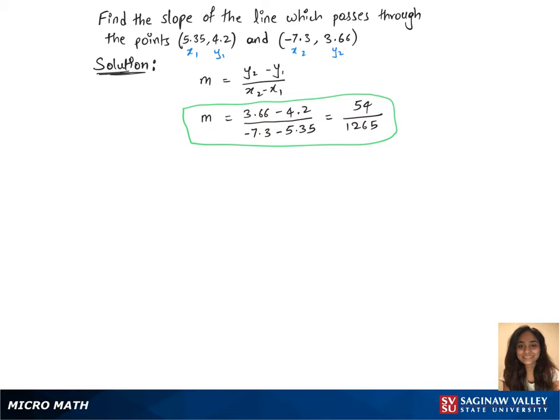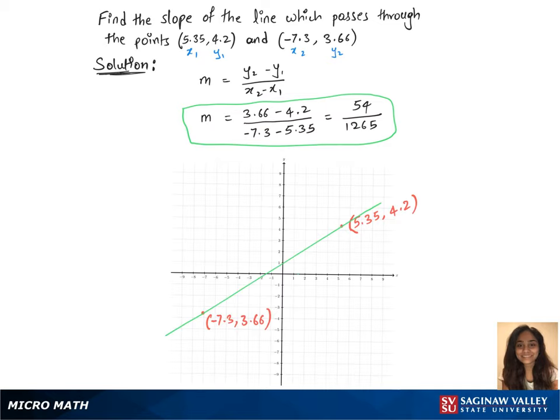And the graph for those two points looks like that straight line that passes through the points.